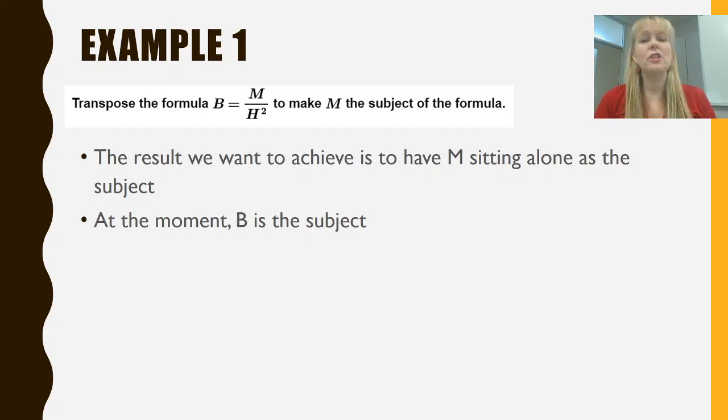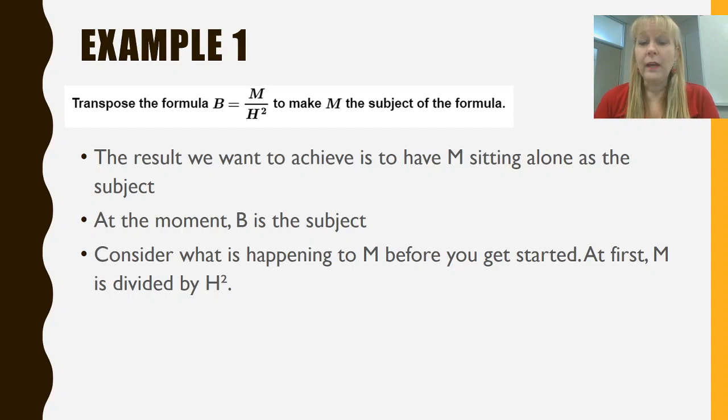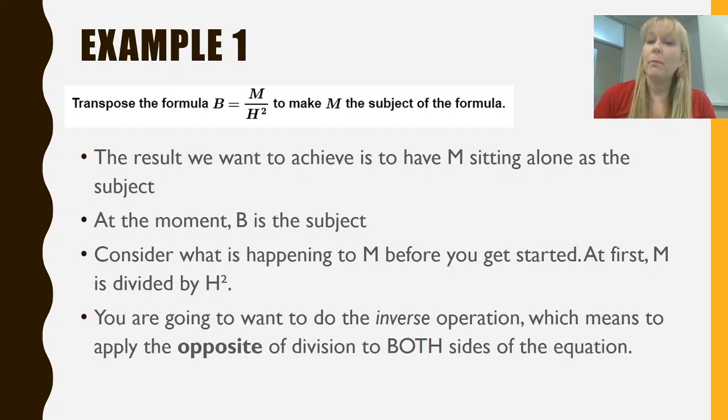So before we actually just jump in and get started we should have a look and see what's going on, what's happening to m before we get started. So have a look, at the moment m is divided by h squared. So what we do when we're transposing formulae is we're going to be doing what's called the inverse operation. So the inverse operation just means we do the opposite to that side of the equation to move things around to different sides of the equation. So at the moment we said that m is divided by h squared so we know at some point we're going to be multiplying the equation by something in order to get m all alone. Let's have a look at how we do that.